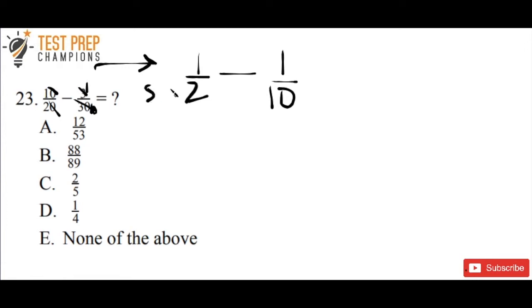Well, if we multiply both the top number and the bottom number of this fraction by 5, then we'll be able to rewrite this problem as 5 over 10 minus 1 over 10.